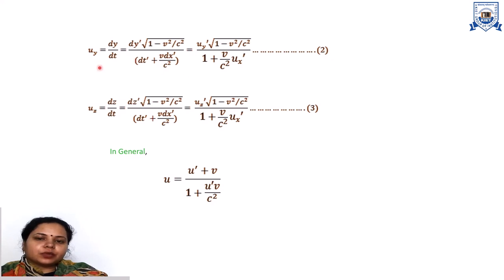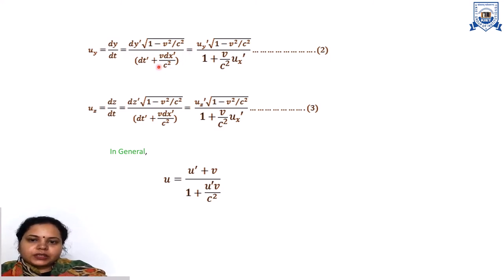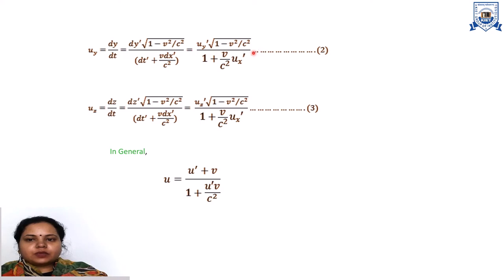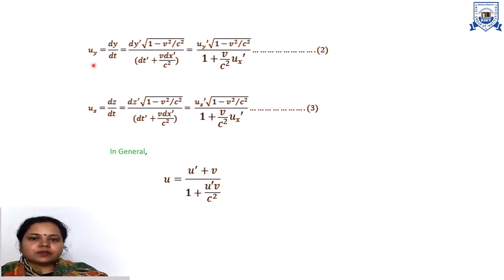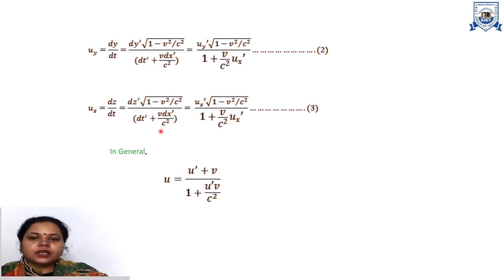For the y-component: Uy = dy/dt = dy-dash·√(1 − v²/c²) / (dt-dash + v·dx-dash/c²), which simplifies to Uy = Uy-dash·√(1 − v²/c²) / (1 + v·Ux-dash/c²). Note that Ux-dash appears here as the x-component, not y — this is simply the mathematics. Similarly, the z-component is Uz = Uz-dash·√(1 − v²/c²) / (1 + v·Ux-dash/c²).